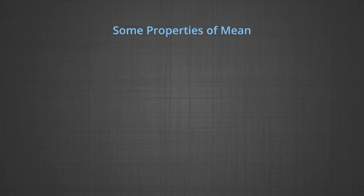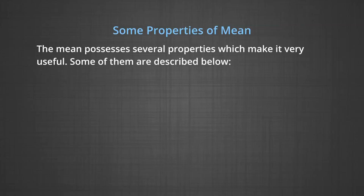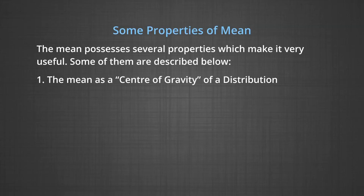We are now going to discuss some properties of the mean. The mean possesses several properties which make it very useful. Number one: the mean as a center of gravity of a distribution. The mean parallels the physical idea of a center of gravity or balance point of ideal objects arranged in a straight line.